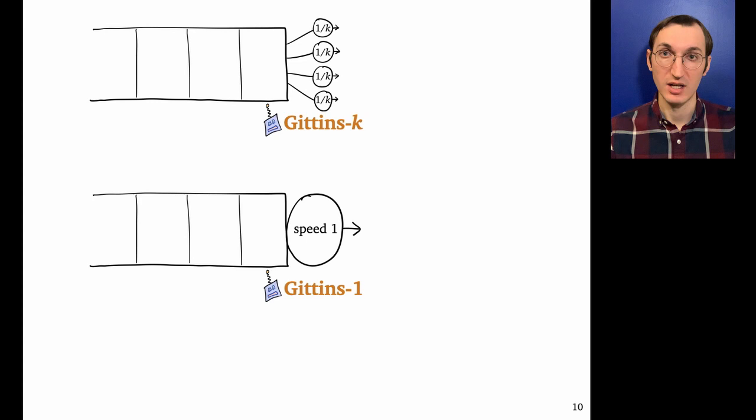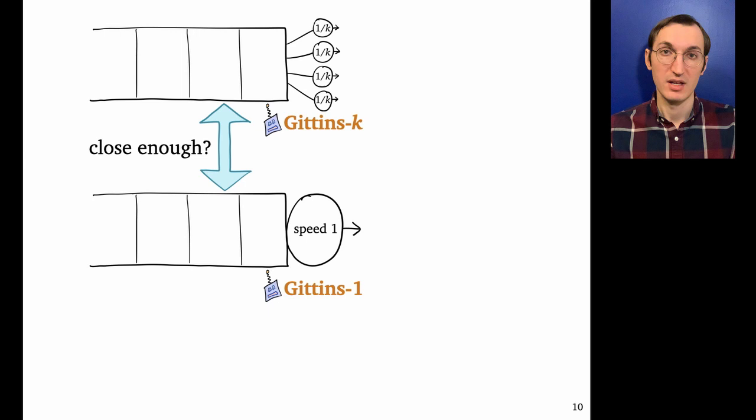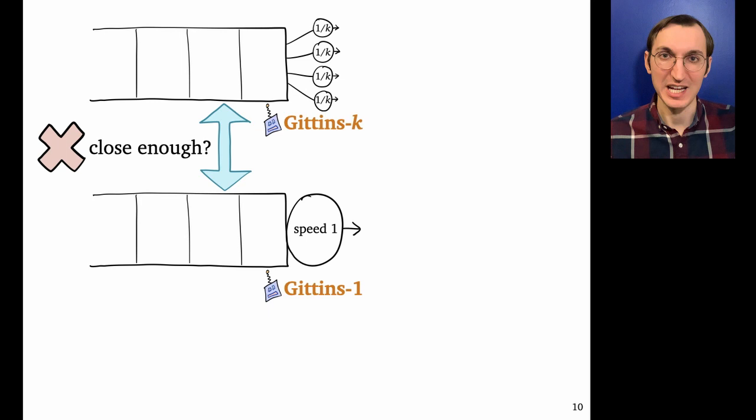which means that there's some hope that these systems are kind of close enough together, at least in heavy traffic, that they might be close enough so that the Gittins-k performance mirrors that of Gittins-1. Unfortunately, we weren't able to show this for Gittins-k.